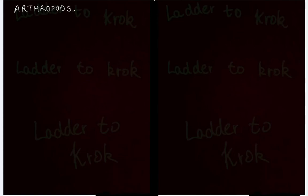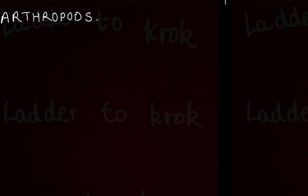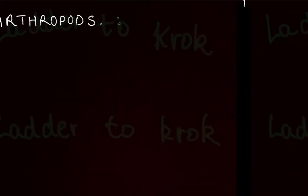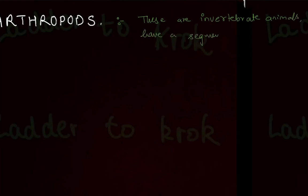Hello guys, welcome back. Let's do a new topic: arthropods. First, let's know what arthropods mean. These are invertebrate animals that have a segmented body and paired joint appendages — appendages means their extremities, their legs.